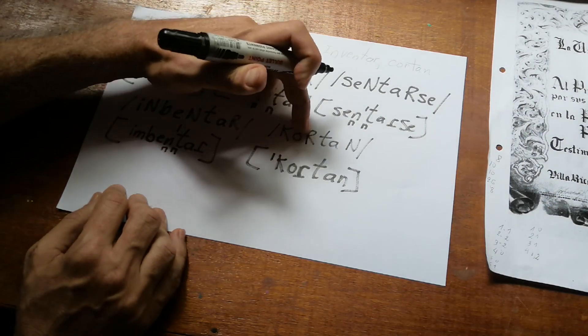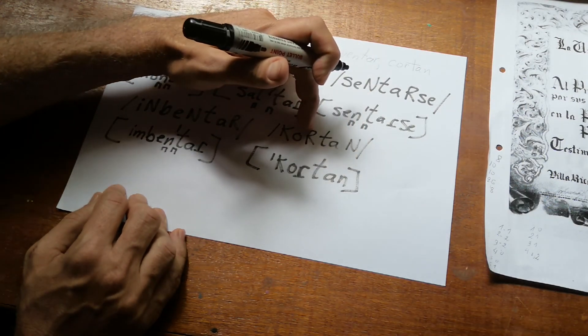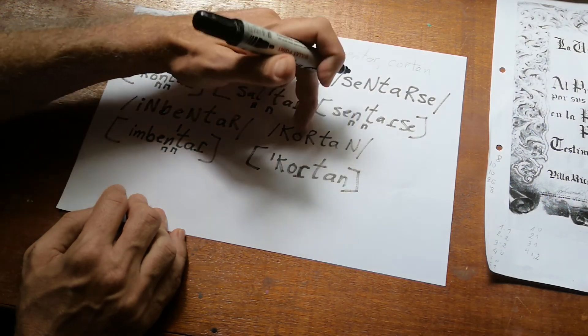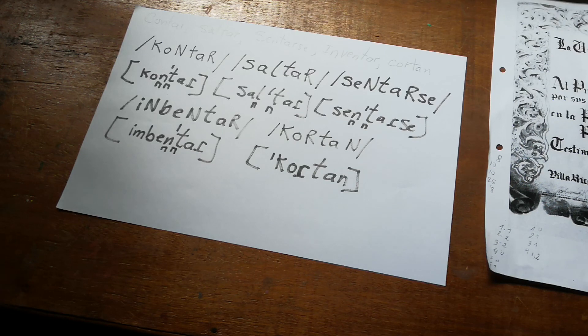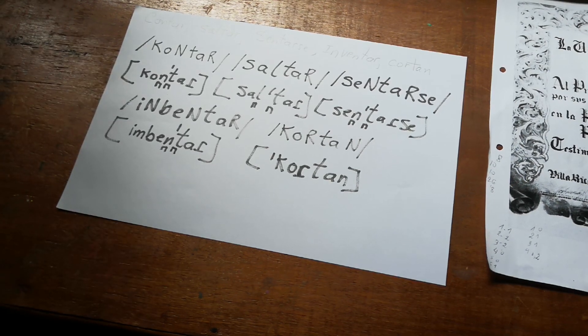So as you can see, we have the vibrante and the nasal archiphonemes that occur only in phonemic transcriptions. Clear? You can now practice them. Thank you.